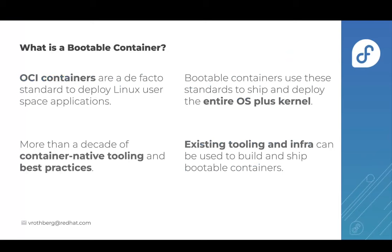Over the last decade, OCI containers have become the de facto way to deploy a complete functioning Linux application, and a large set of practices and tooling have evolved around them. Bootable containers are a modern, opinionated way of deploying, configuring, and managing immutable image-based Linux systems using those pre-existing practices and tooling. Just like ordinary application containers, you can build bootable containers using existing container technologies such as Dockerfiles, and with existing tooling such as Podman, Docker, or BuildKit. You can further store these images on any container registry, such as Quay.io, Docker Hub, or the GitHub Container Registry.